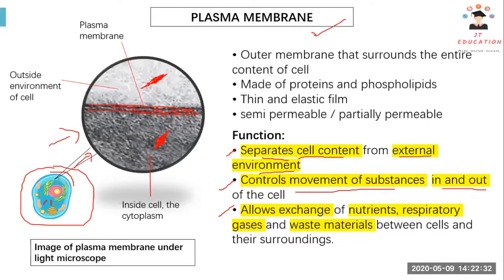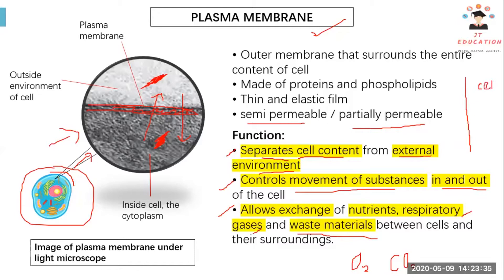One feature I haven't discussed yet is the term 'semi-permeable.' Whatever contents want to pass through into the cell, they have to cross the plasma membrane. What 'semi-permeable' means is that some substances may not be able to pass through the plasma membrane.